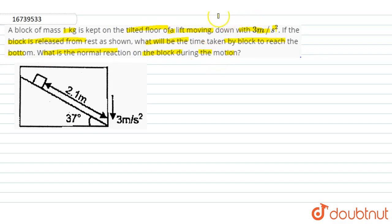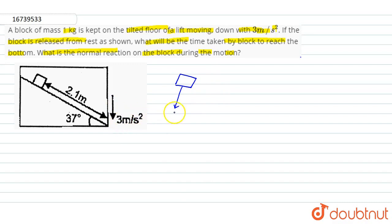If we look at the free body diagram of the block, then we have a component which will be related to the acceleration of the lift, which will become m into (g minus a) cos theta. Similarly, we have a component here which will become m into (g minus a) sin theta.